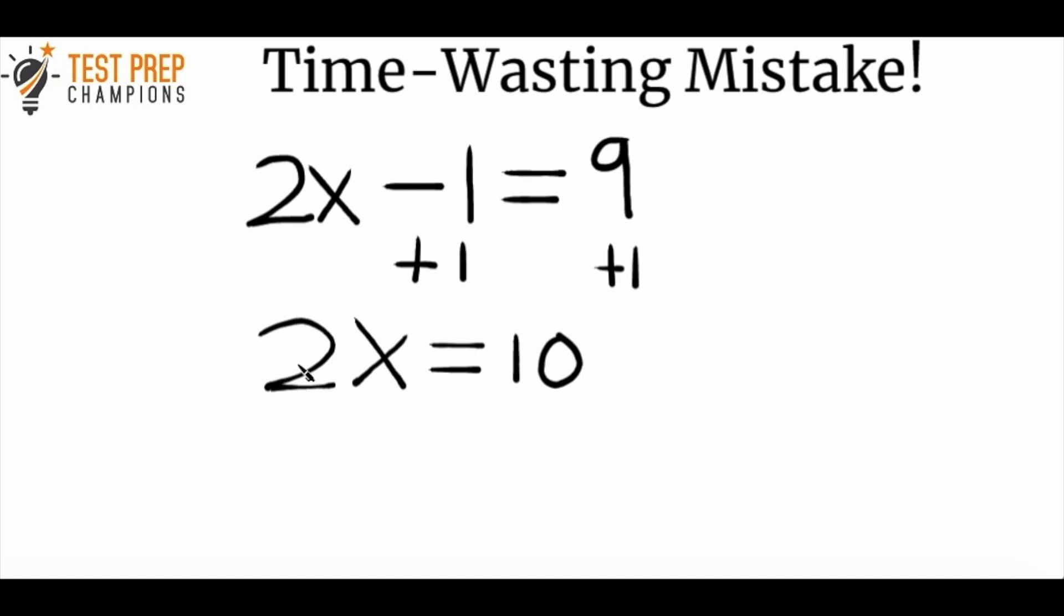Now, since we have 2 times x, we want to do the opposite of multiplication, which is division, so we're going to divide by 2 on both sides. So 10 divided by 2 equals 5, so we'd see here that x equals 5. Hopefully you already understand this. If it's not though, I have a video that covers solving equations more in depth, so I'll put a link down below.